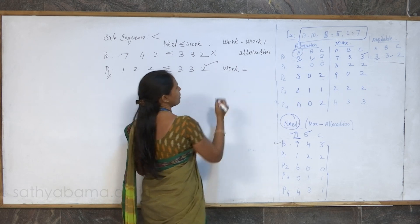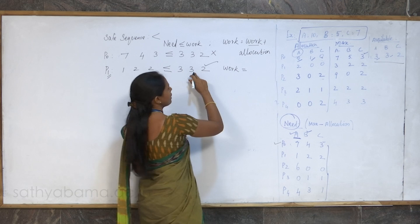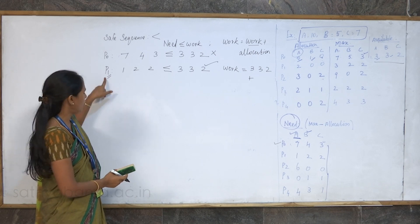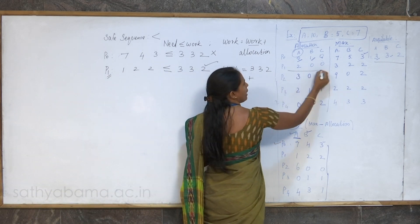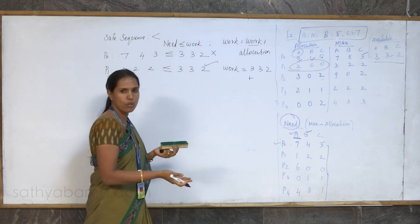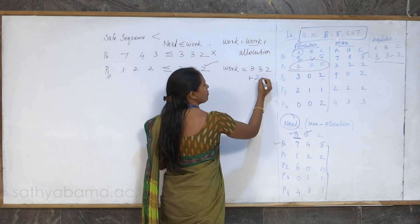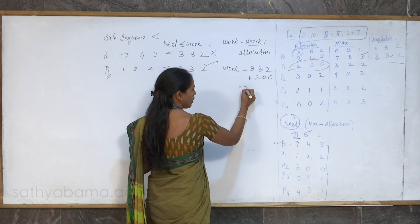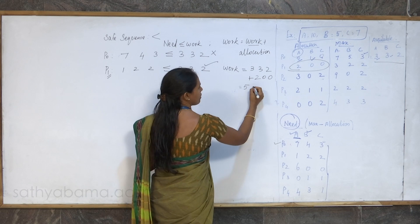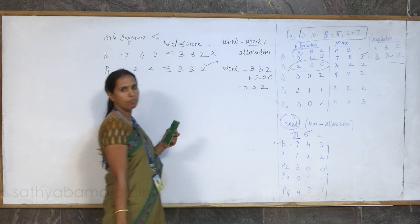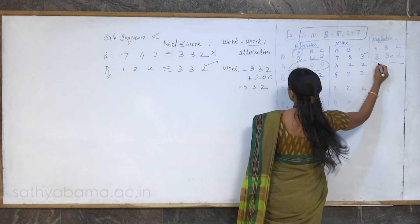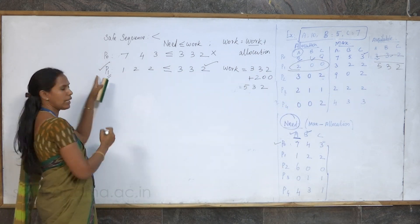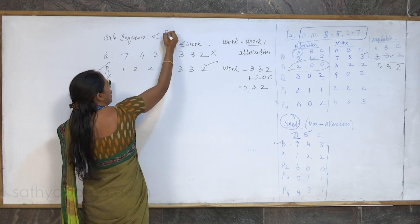Work equals already available 3, 3, 2 plus the allocation of P1 after completion, which is 2, 0, 0. So the total available is 3 plus 2 equals 5 instances of A, 3 plus 0 equals 3 instances of B, and 2 plus 0 equals 2 instances of C. Available is now 5, 3, 2. Process P1 is totally completed and added to the safe sequence.